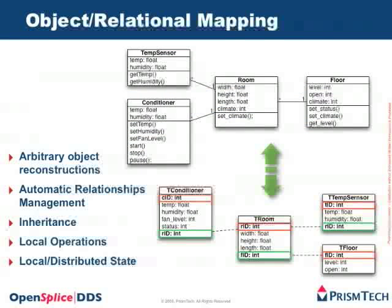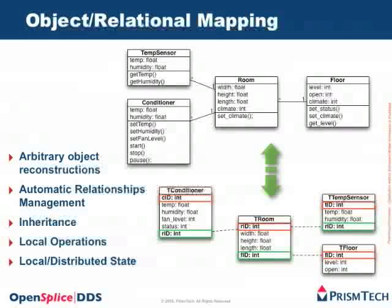If you don't like SQL or the relational data model and prefer object orientation, you can always start with a relational data model and reconstruct an object-oriented model which provides relationship as a first-class concept. You can move from one representation to the other in any direction that you wish. The other advantage of using an object-oriented representation for your information model is that you can decorate it with local operations.